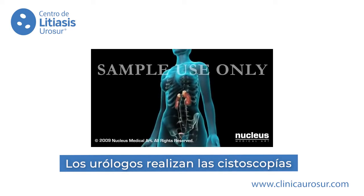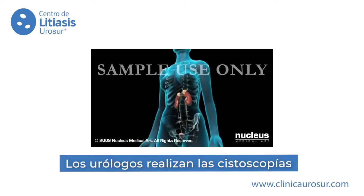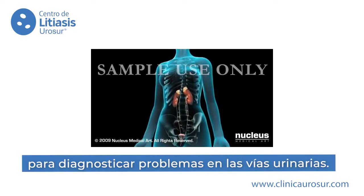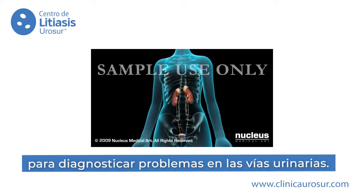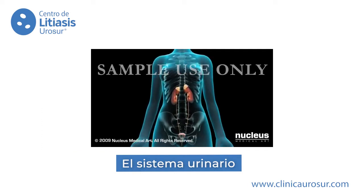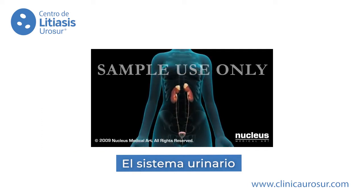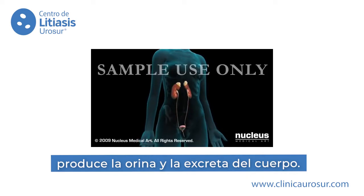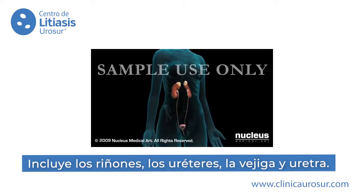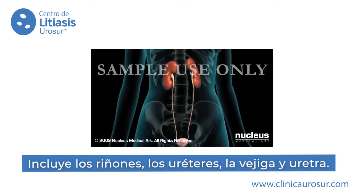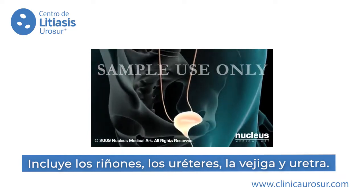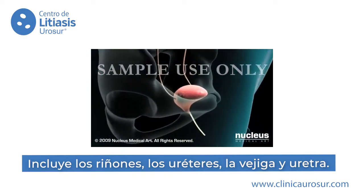Your doctor will perform a cystoscopy to diagnose conditions of your urinary tract. Your urinary system, or urinary tract, produces urine and excretes it from the body. It includes the kidneys, ureters, bladder, and urethra.